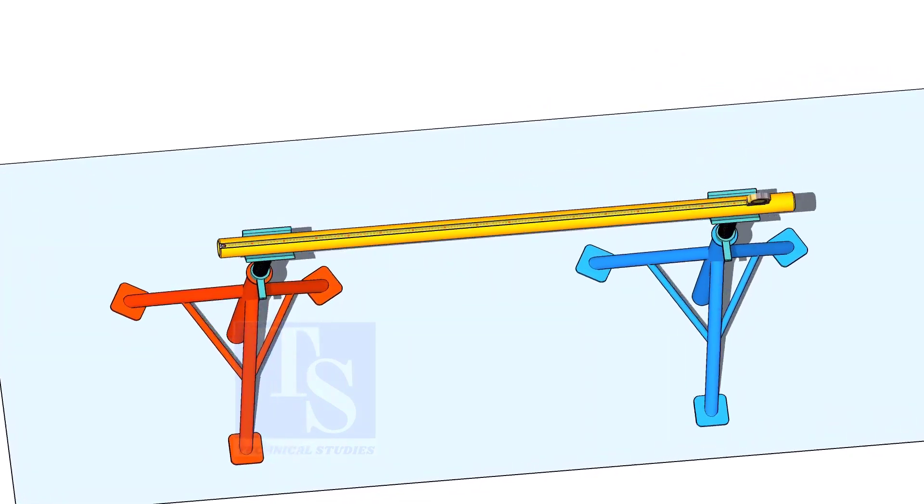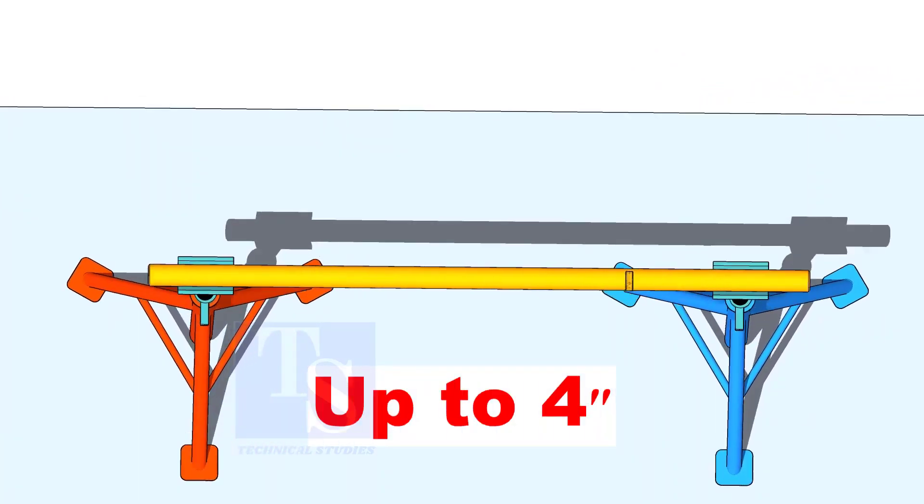For pipes the diameter up to 4 inches, you can use a measuring tape to draw the circular line.